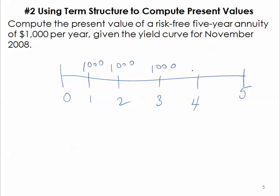The difference from how we've calculated the present value of an annuity previously was that we used a single discount rate to discount all these cash flows.